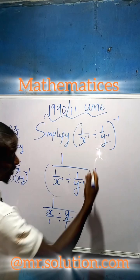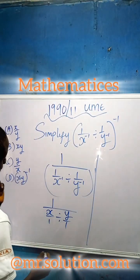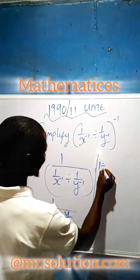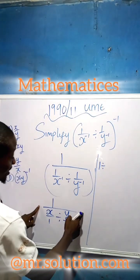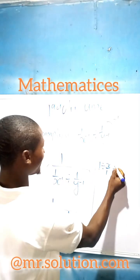All to the power of one, the same thing. So what we do next, after doing this, we are going to have one divided by this division. Then x over one, divided by y over one.